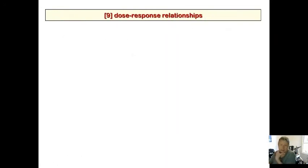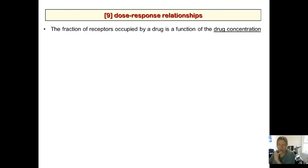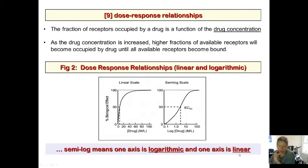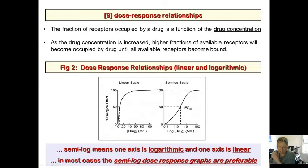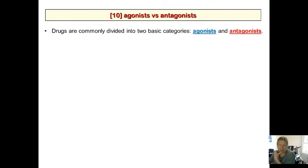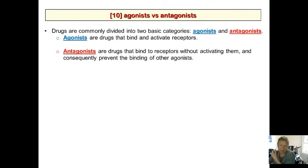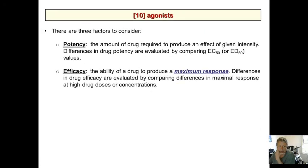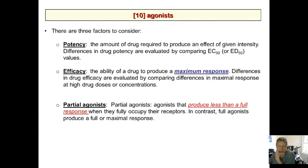Dose-response relationships — I think I did this. You can follow this in the last lecture. We talked about linear and logarithmic dose-response and how a semi-log plot is preferable because you have a wider range of potency. Semi-log means one axis is logarithmic and the other is linear. Agonists and antagonists — we did the agonist section last time, covering potency, efficacy, and partial agonists. I'm going to skip the agonist section and continue with antagonists.